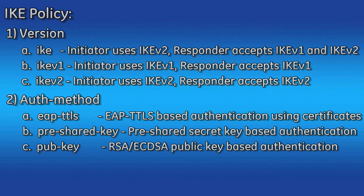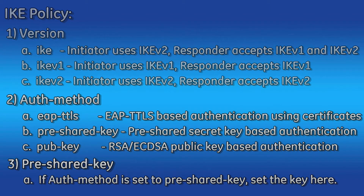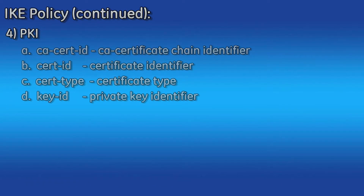The auth method command has three options: EAPTTLS, pre-shared key, and pub key. EAPTTLS is used for endpoint integrity. Pre-shared key uses a pre-shared key between the two IPSec gateways for authentication, whereas the pub key option uses X509 certificate-based authentication. If you selected pre-shared key mode, the pre-shared key command is where you would set it. If auth method is set to EAPTTLS or pub key, the PKI setting is where you tell the device which certificates to use.